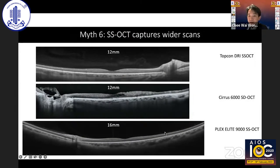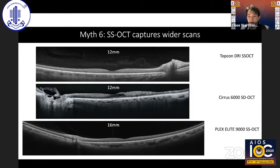Myth number six: swept source OCT can capture wider scans than spectral domain. The technical differences between the two are not limiting factors for scan width, so both instruments are capable of capturing wide scans. Commercially available OCTs can now scan up to 12 millimeters, which has become the standard, while the Plex Elite swept source OCT can capture up to 16 millimeters.